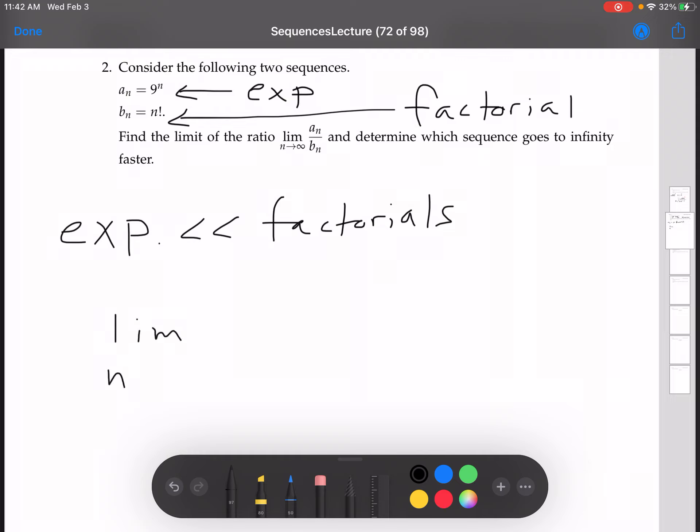So the limit, as n approaches infinity, of 9 to the n over n factorial is 0.